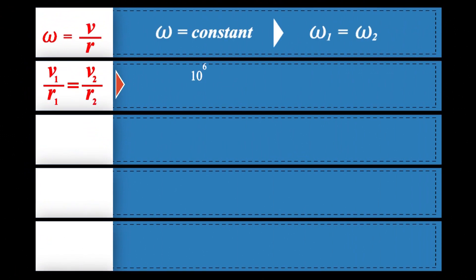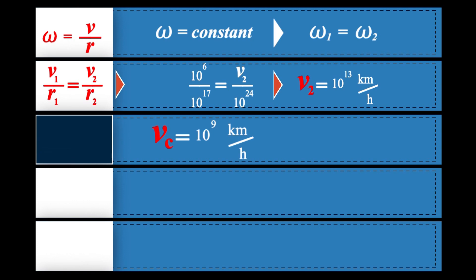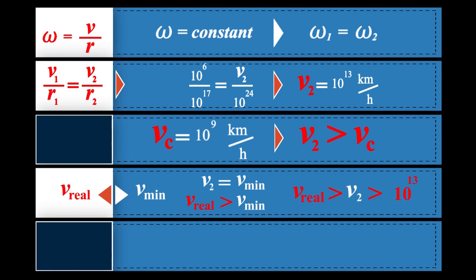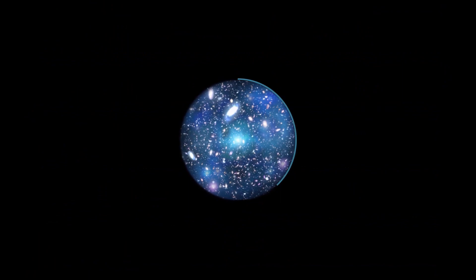the minimum possible speed of the rotation of objects at the edges of the observable universe. And, certainly, billions of celestial objects are currently rotating at the edges of the universe at the speed that is thousands of times faster than that of light.